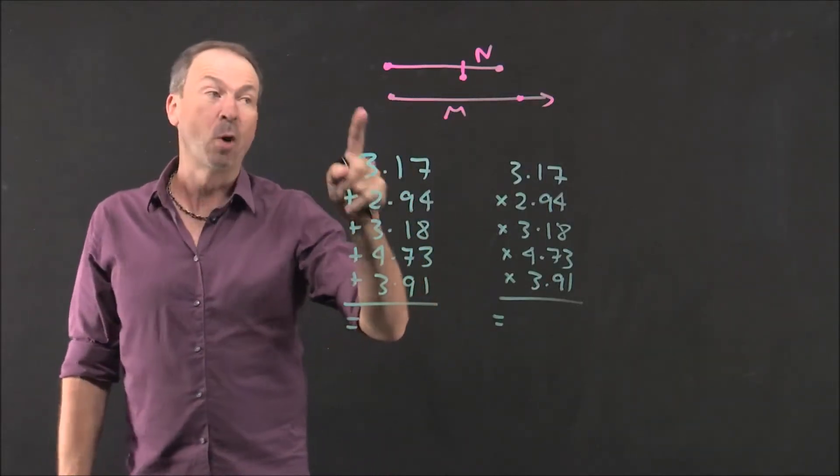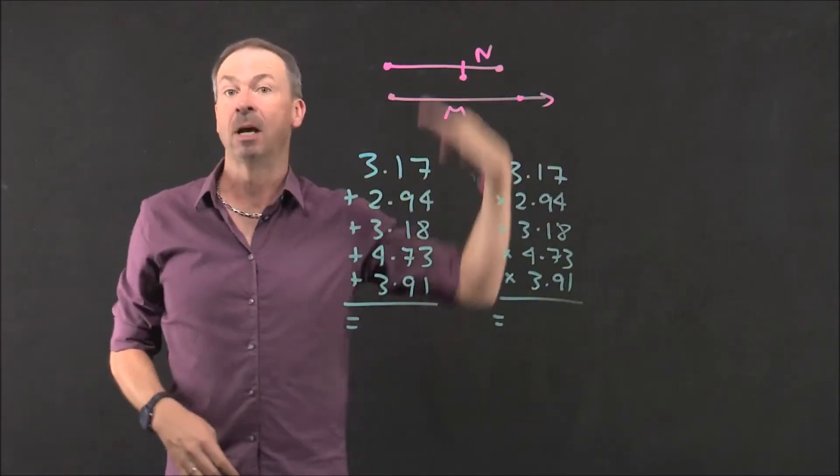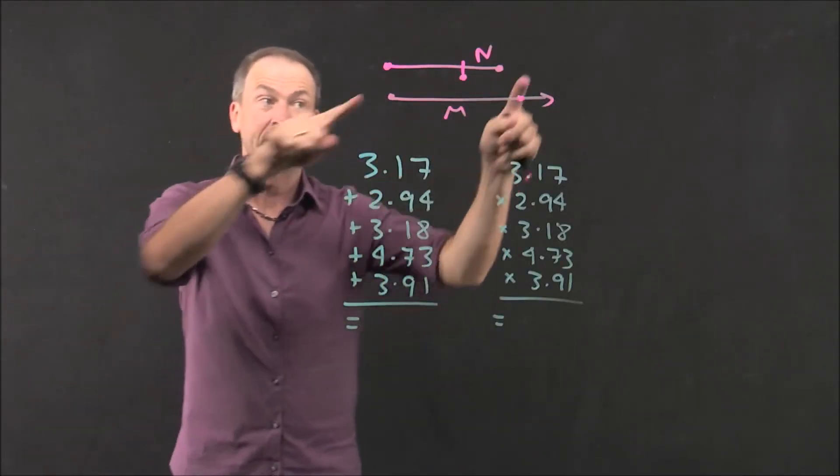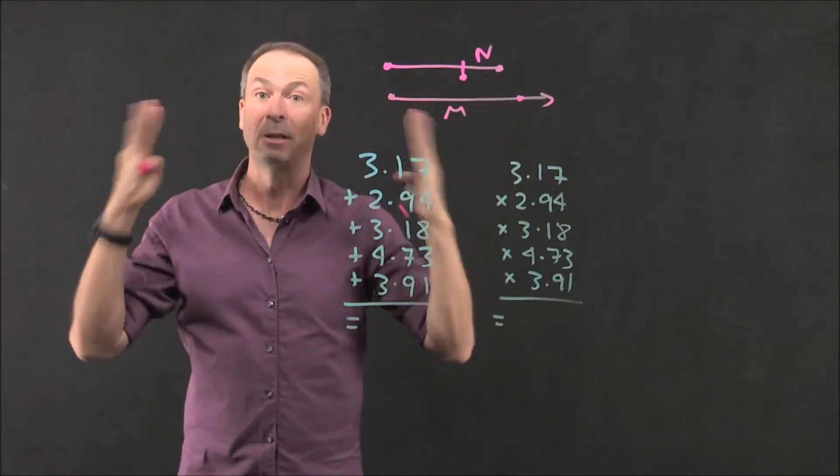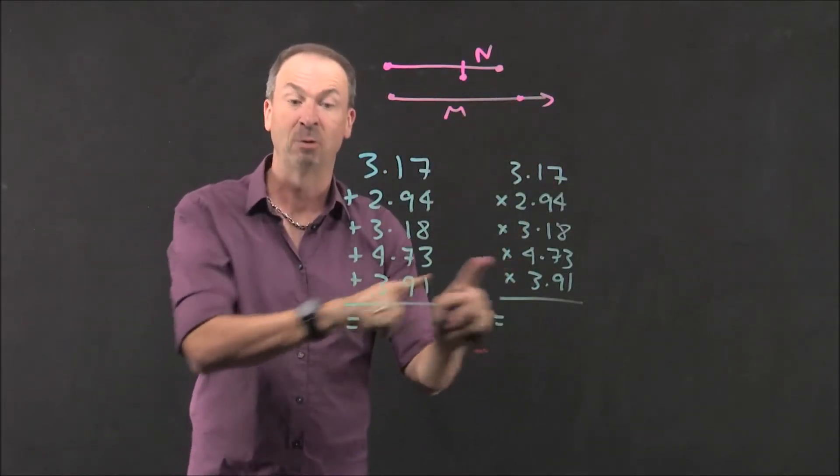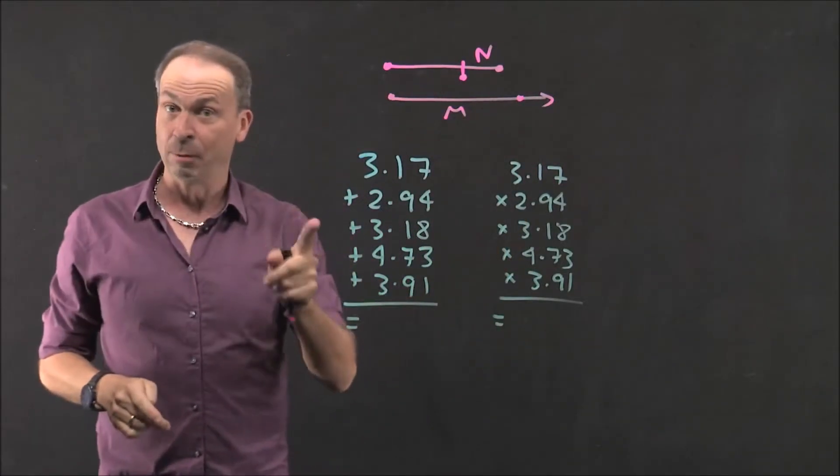So what he did then, he worked on creating tables of values, logarithm tables, log tables, so that people didn't actually have to understand his theory. All they could do is just look up the log tables and convert multiplication problems into addition problems. I'll show you what a log table looks like next.